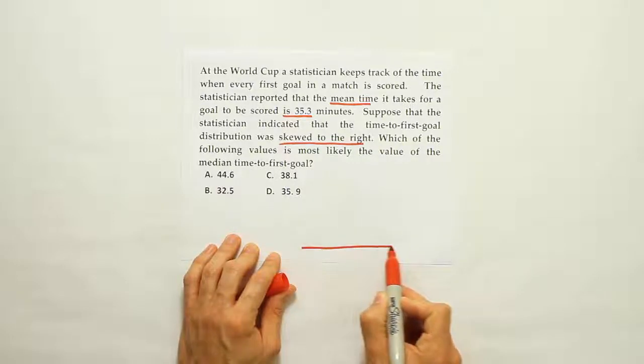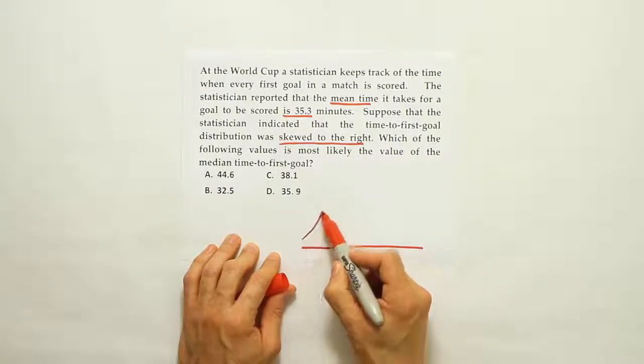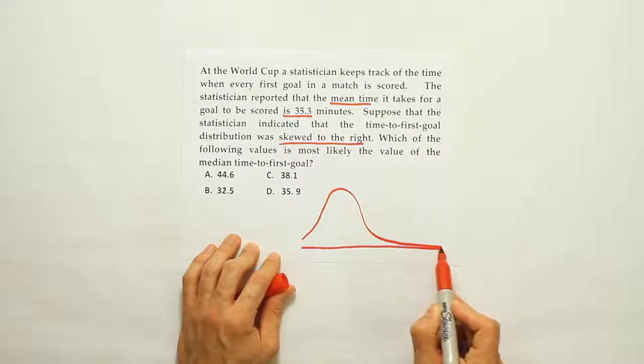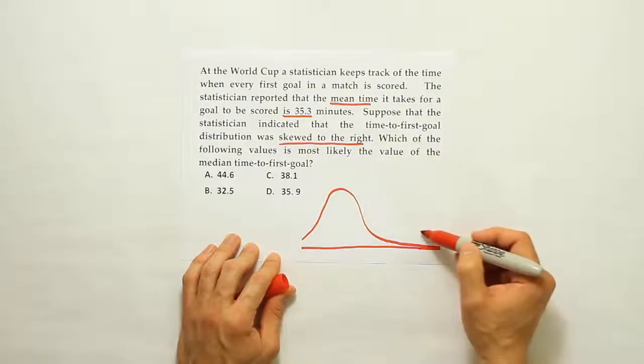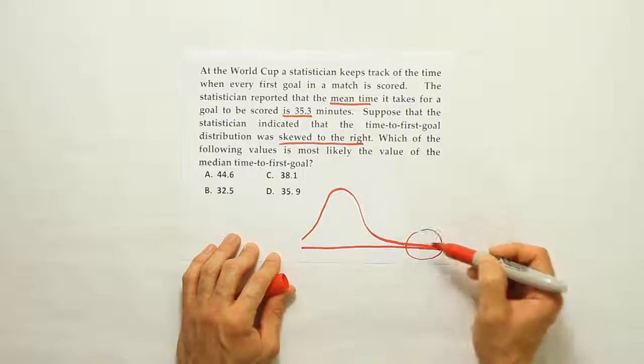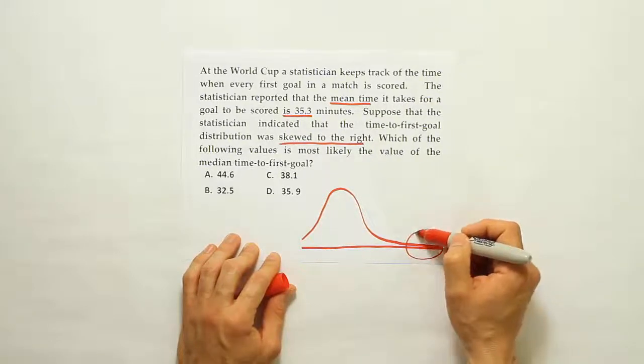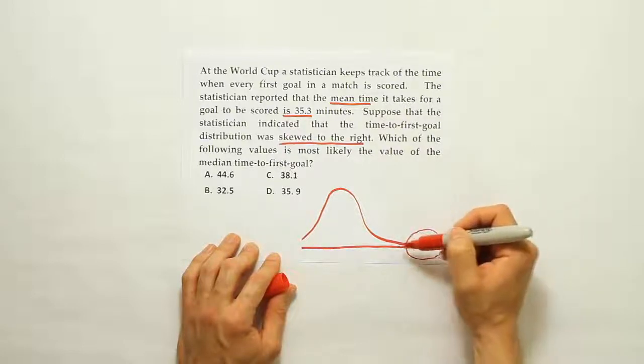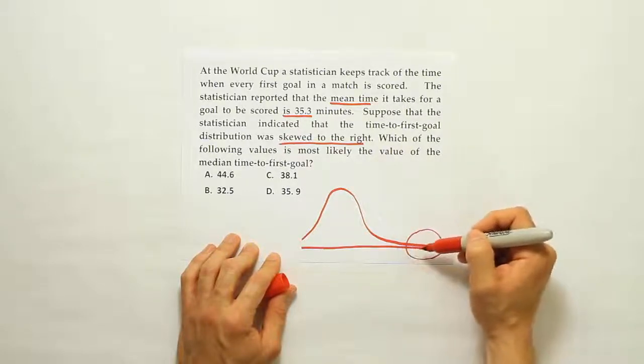Let's draw here the curve that's skewed to the right. So a curve that's skewed to the right has a long skinny tail on the right-hand side. What I want to pay attention to about this tail on the right-hand side is that that tail is generally going to pull upon the mean and drag it over to that side.